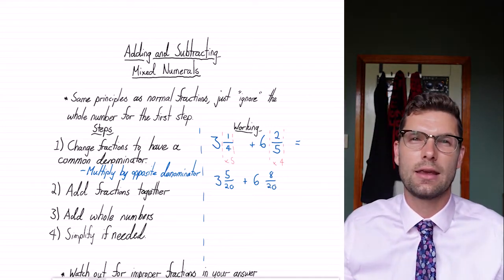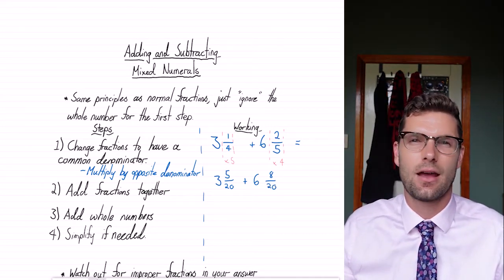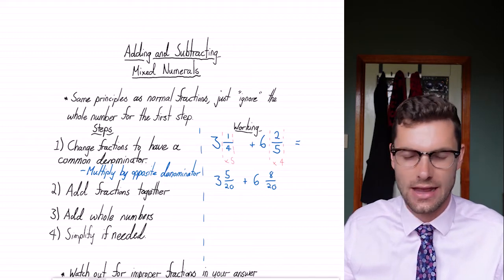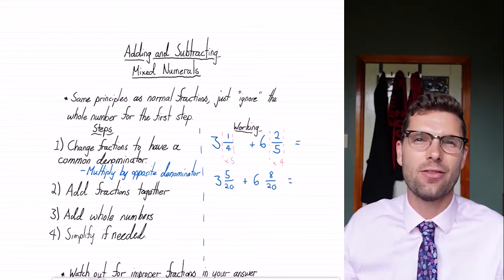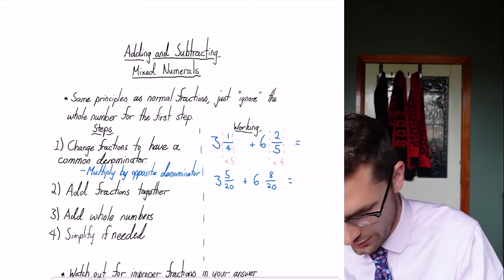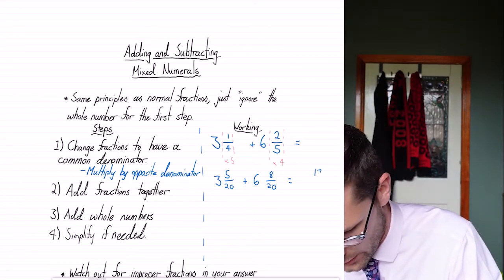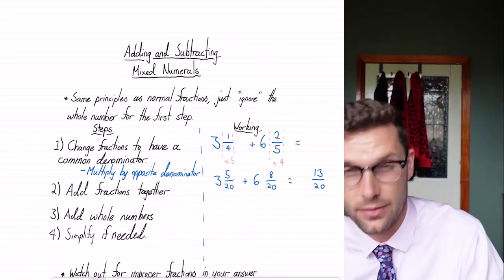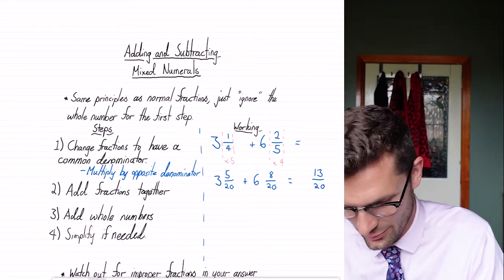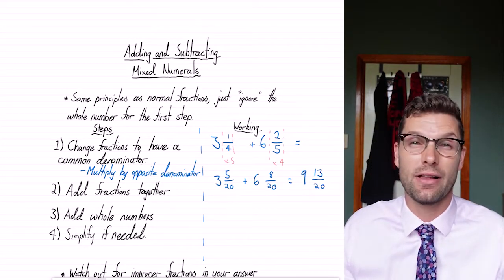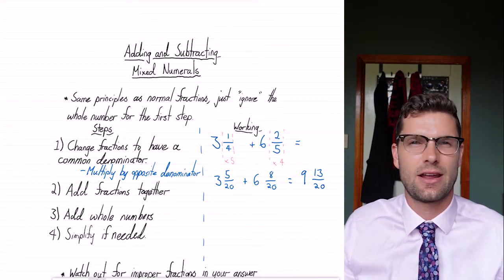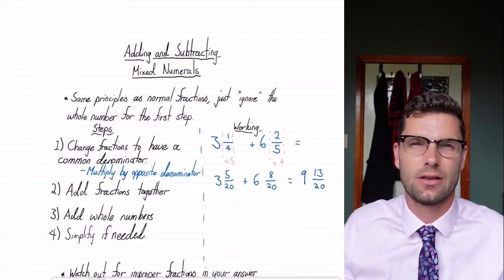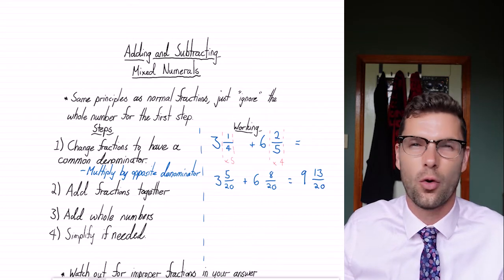Now here I can add our fractions together. And then add the whole number as well. So I've got 13 over 20 is my fraction, and then the three plus six is equal to nine. And that's my final answer. Obviously, you still need to check for simplification if possible, but that's all we need to do.